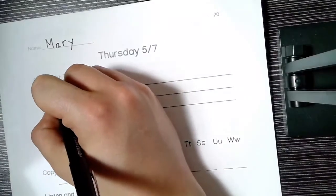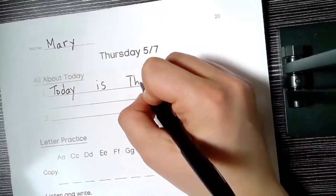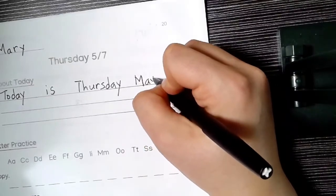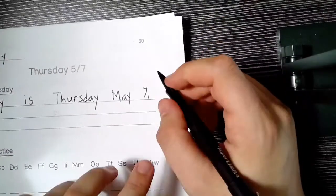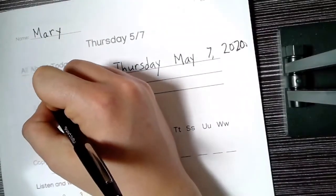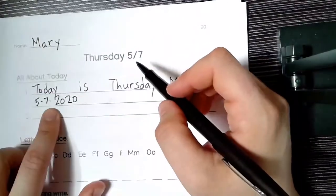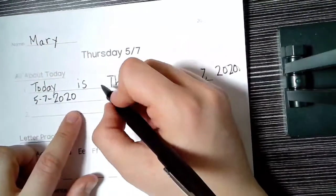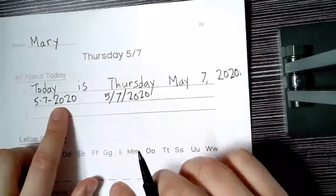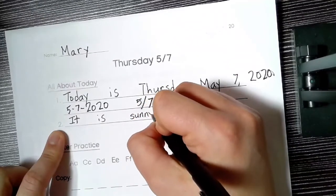Number one. Today is Thursday, May 7, 2020. And the short date is 5, 7, 2020. And as you can see, you can write it like this with these lines. This actually looks more like a dot. These lines, or same as here with the slash: 5 slash 7 slash 2020. Both are good. It is sunny. It is sunny today.